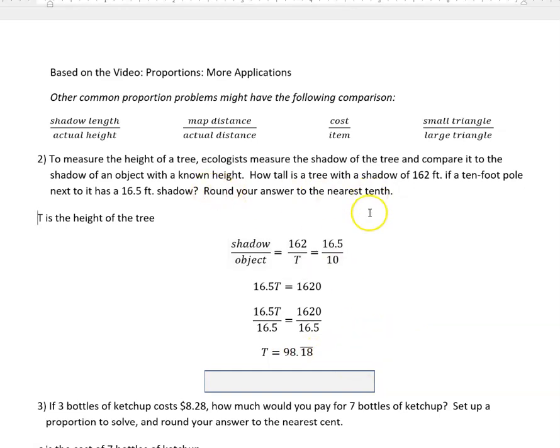I have to look back to my directions and it says round your answer to the nearest tenth. If I do, then I can see that that would be 98.2, or the tree is about 98.2 feet tall, which is indeed shorter than its shadow.